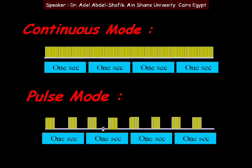In continuous phaco mode, the ultrasound is on all the time — every second is full with ultrasound. In pulse mode, we have part of the second with phaco on and another part with phaco off, so we get a lesser amount of energy.